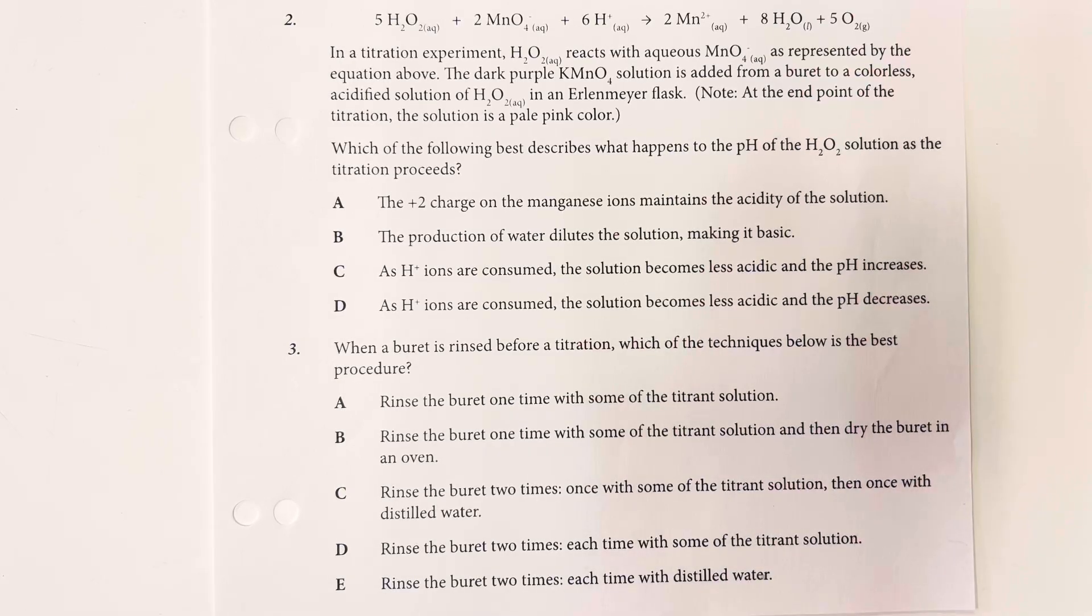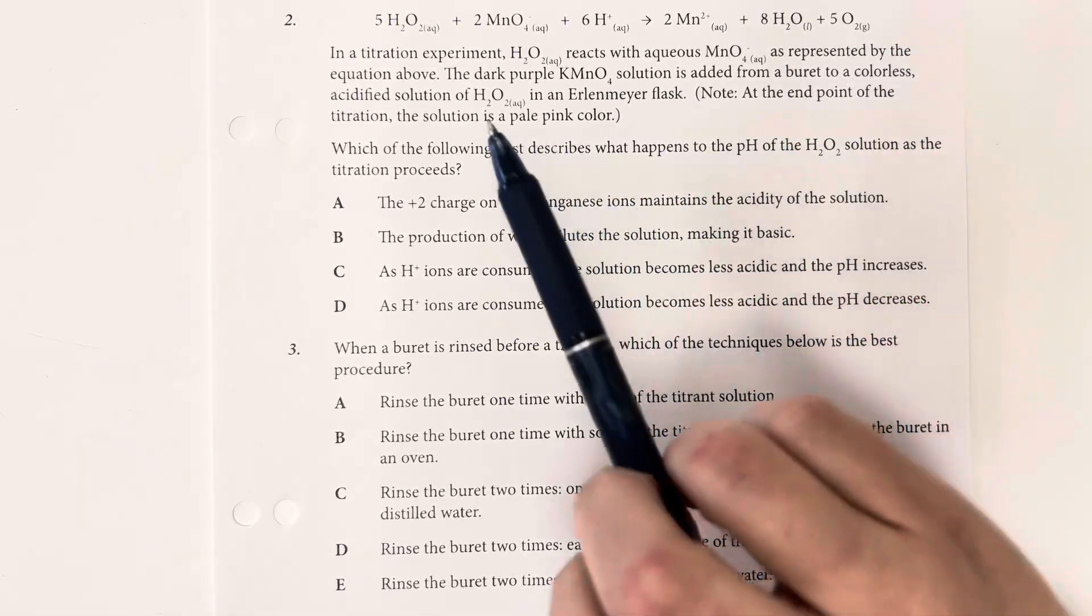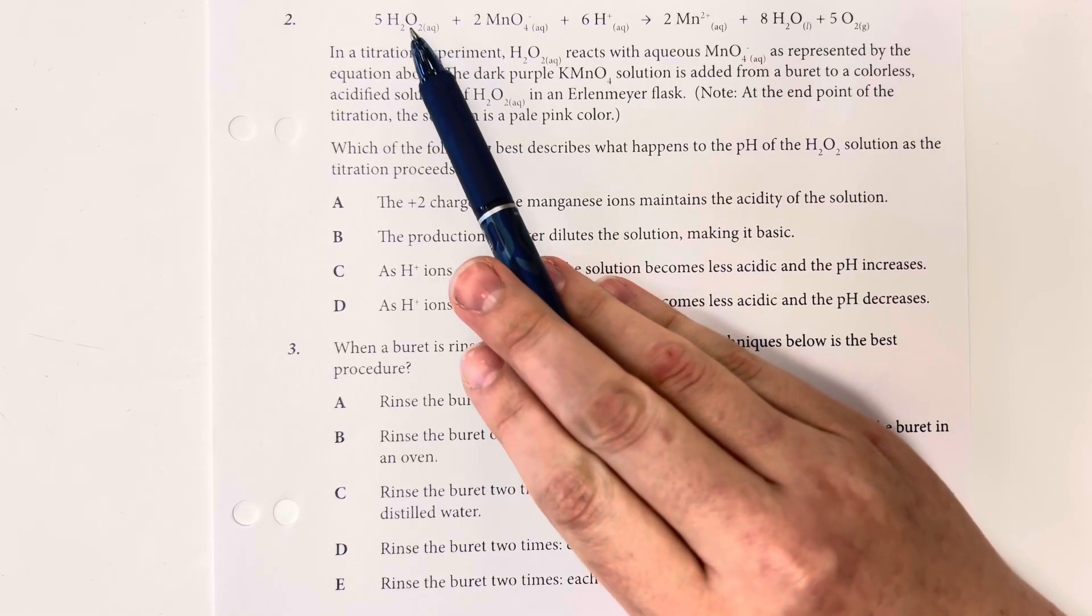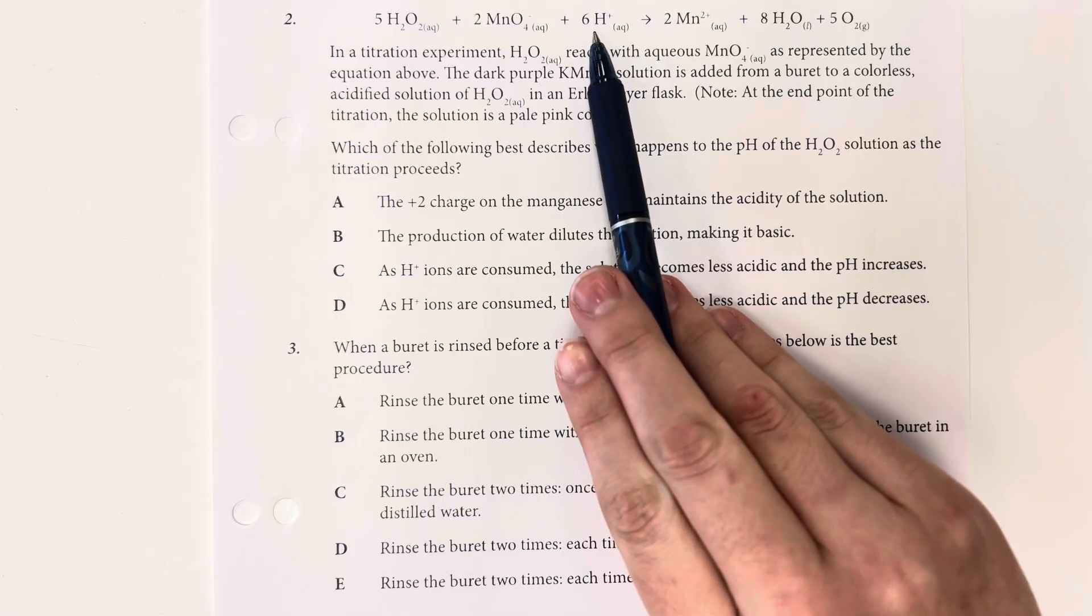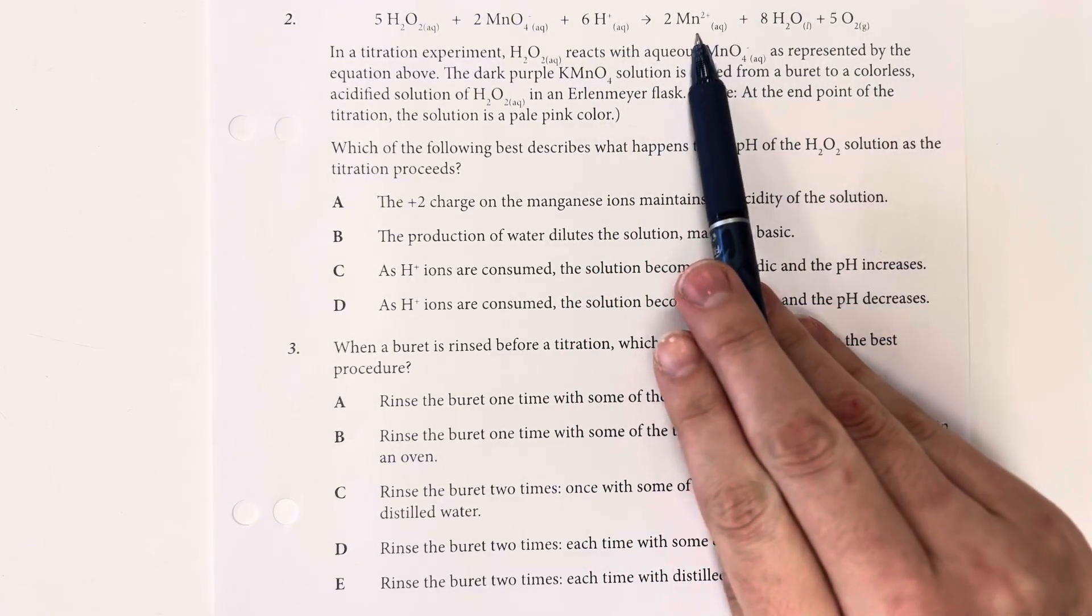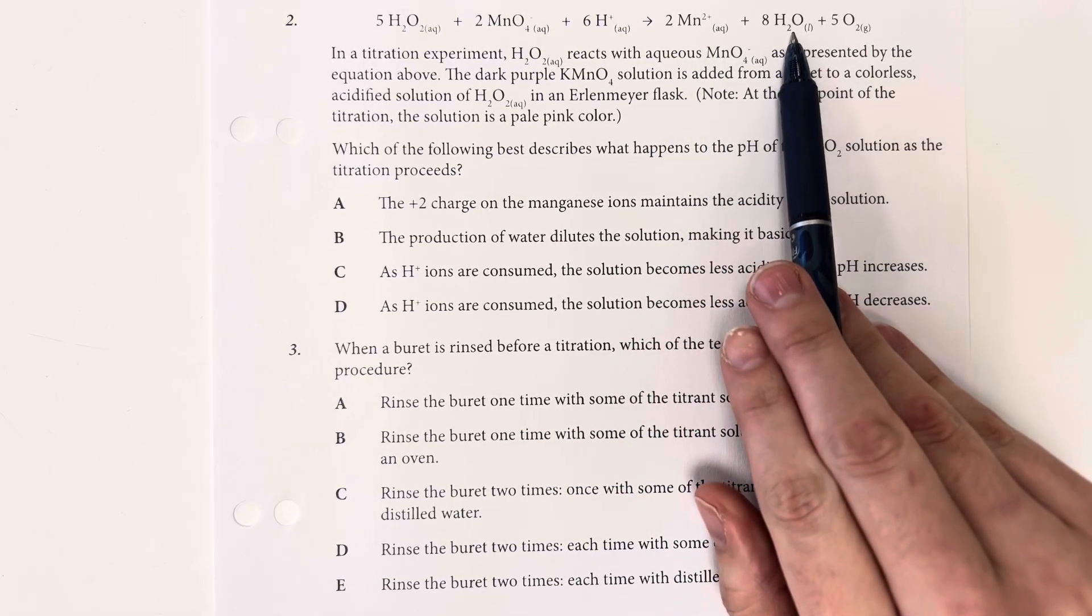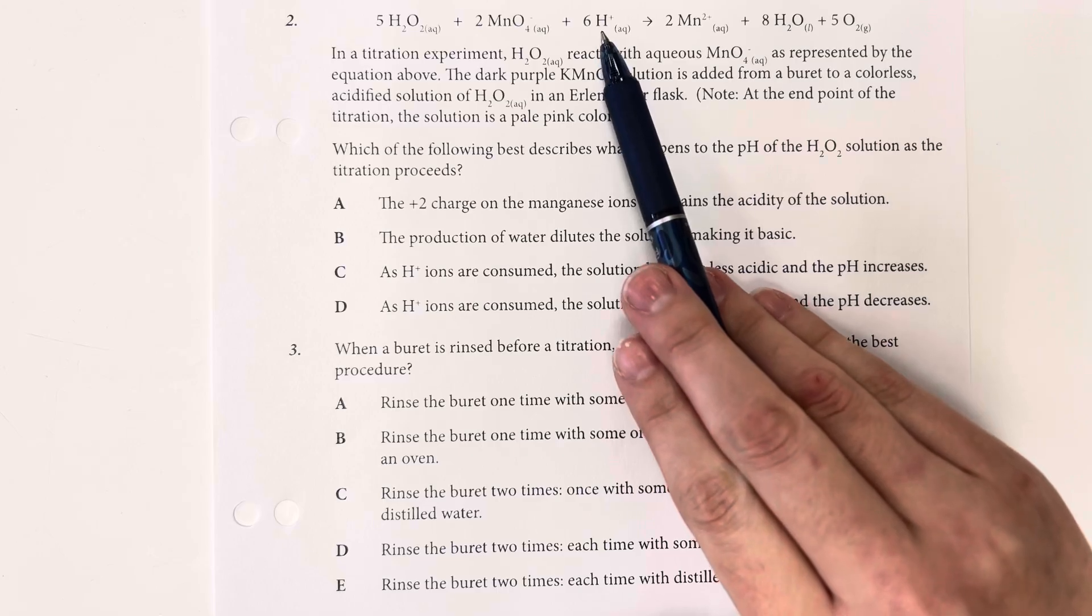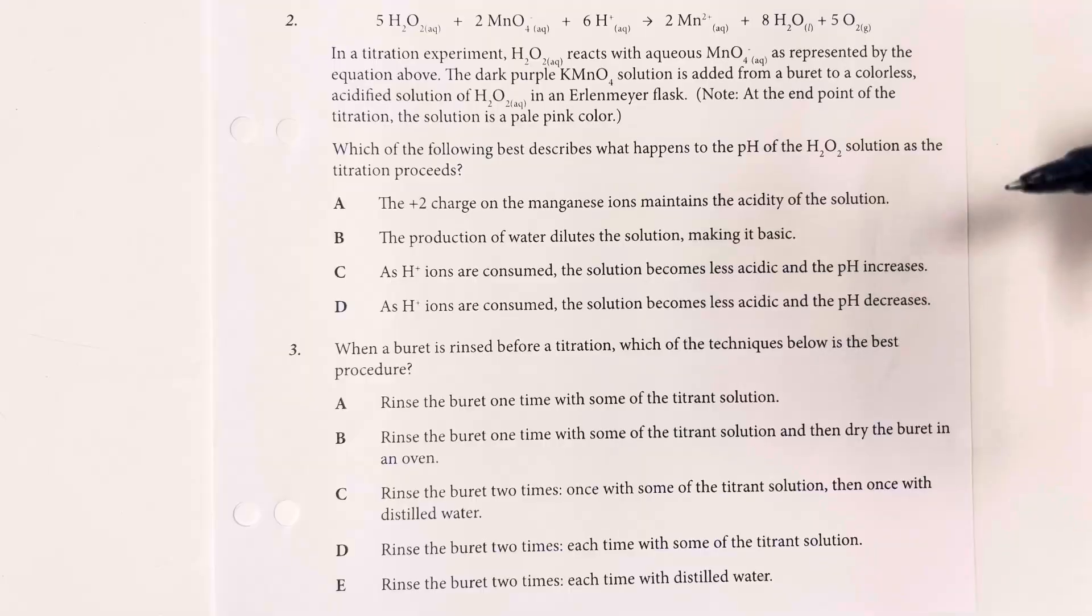Which of the following best describes what happens to the pH of the hydrogen peroxide solution as the titration proceeds? So as we go through, we can see that we have the hydrogen peroxide plus the permanganate and the acid that we have here, and we are getting out some manganese ions, water, and oxygen. So the acid is being removed during this process,